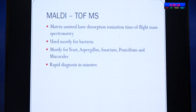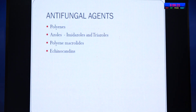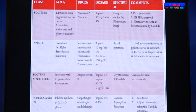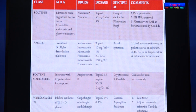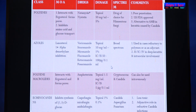Treatment options include topical, oral, parenteral, and injectable forms. The most commonly used antifungals are polyenes and azoles. Among polyenes, natamycin is the drug of choice for all filamentous fungi and is the only FDA-approved medication for fungal keratitis. Azoles are not used as primary treatment but as adjuncts in cases not responding to polyenes. Amphotericin B is mainly used for yeasts.